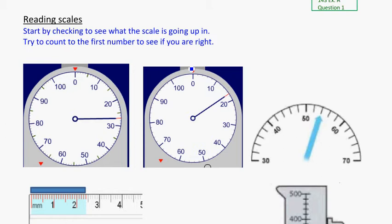One of the things that you can do is take a look at it. If you're not sure how to figure it out exactly, you can always take a guess and just try to count to the first number to see if you're right. On this first example here, you can see the hashes. If I started at zero, one, two, three, four, five, six, seven, eight, nine, ten.